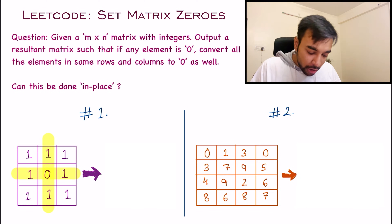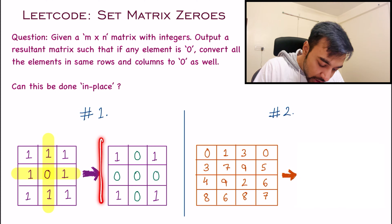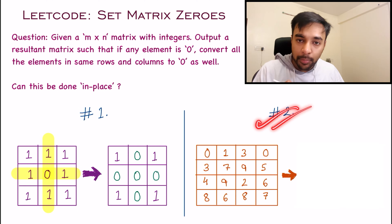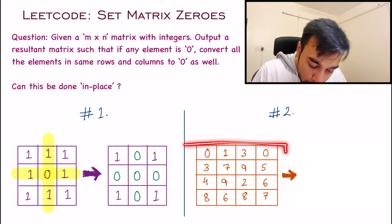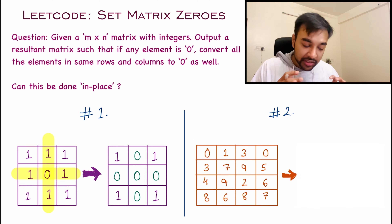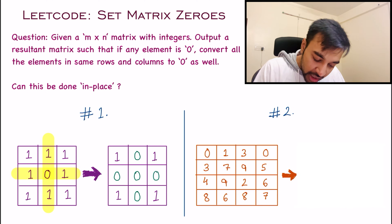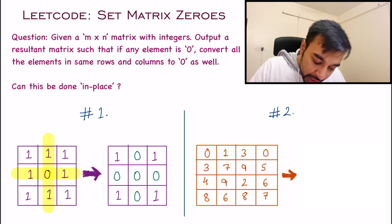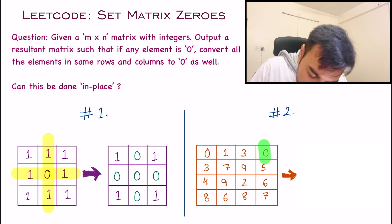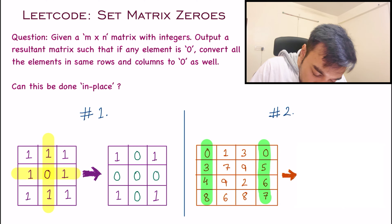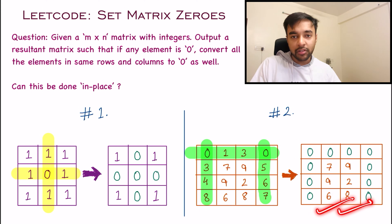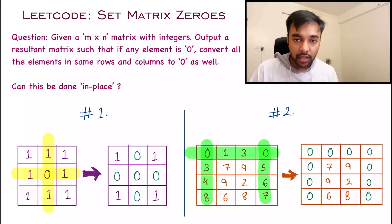For the first test case, your resultant matrix will look something like this. Similarly, in test case number two, we have a larger matrix with two zeros. You need to convert all the other elements in the same column and in the same row to zeros, and this matrix will be the answer.